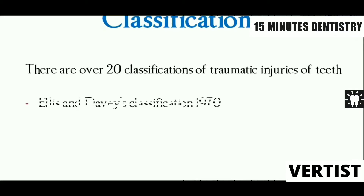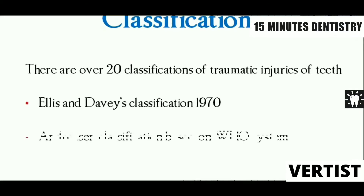To start with classifications, there are more than 20 classifications of traumatic injuries to the teeth. The most commonly used ones are LSNDV's classification, which was proposed in 1970, and the Anderson classification based on the WHO system, which can be used for both the primary as well as the permanent teeth. So first we'll see the LSNDV's classification.